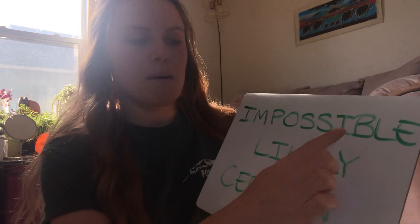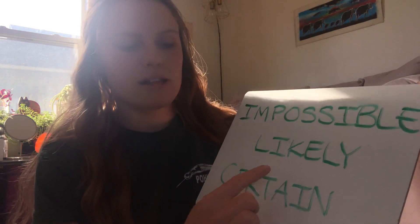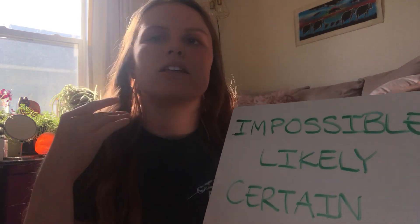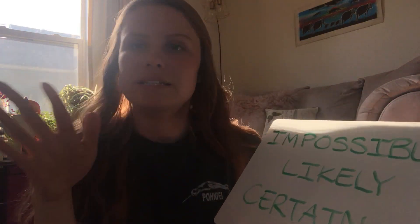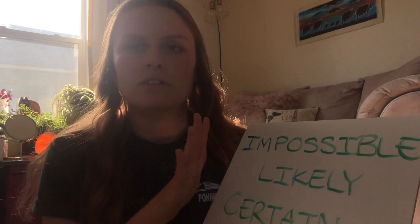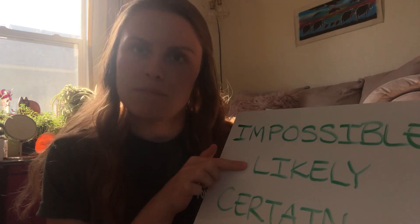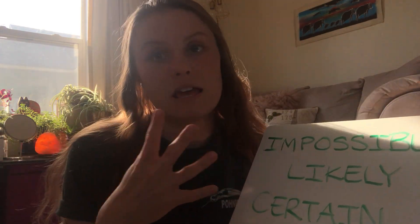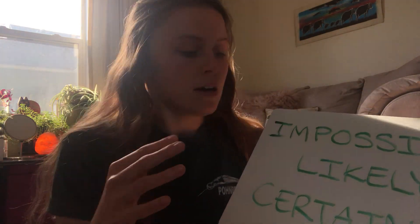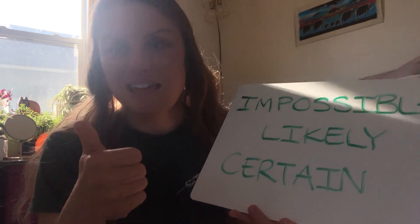These are three very important words: impossible, likely, and certain. You use them in life and in math. Remember: impossible means it's not going to happen, there's no chance. Likely means there is a high chance but it may not happen. And certain means 100% — that will definitely happen.